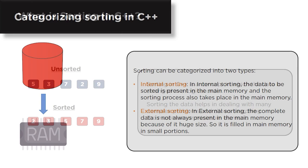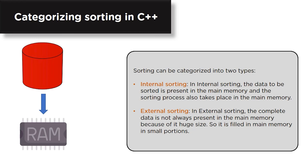In C++, sorting is categorized into two types: internal sorting and external sorting. In internal sorting, the data to be sorted is present in the main memory and the sorting process also takes place in main memory. In external sorting, the data is not always present in main memory because the data is large, so it is filled into main memory in small portions.